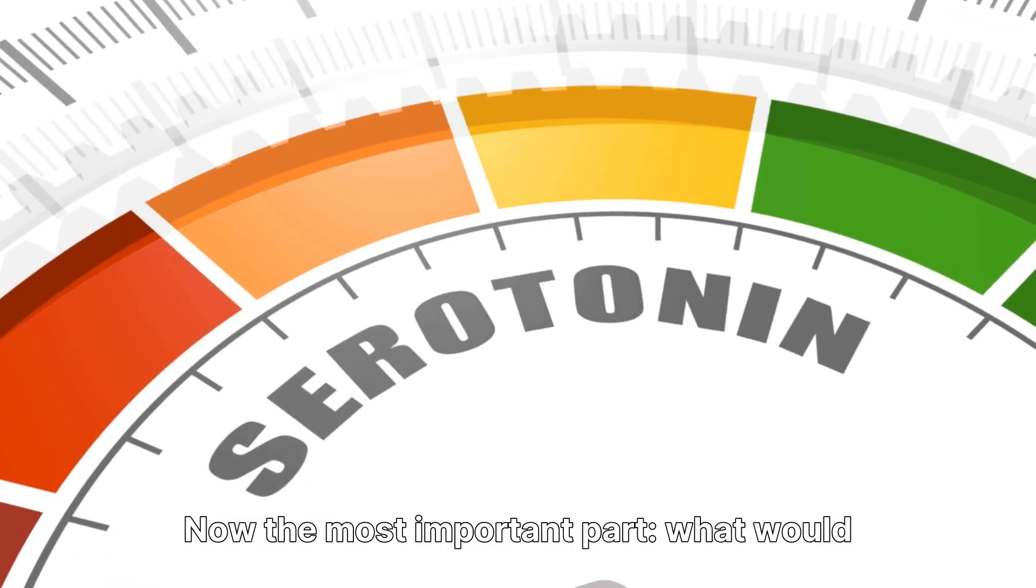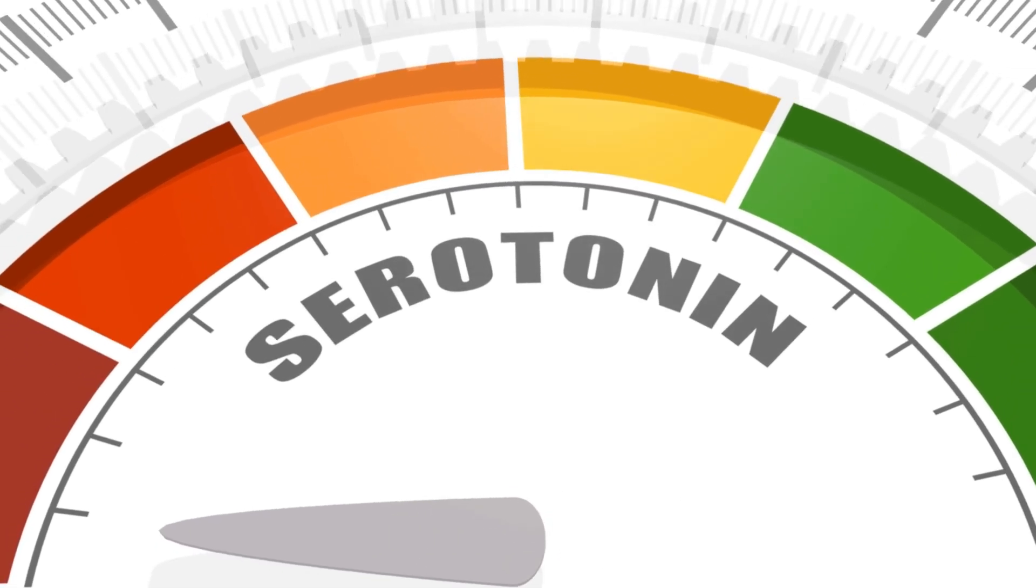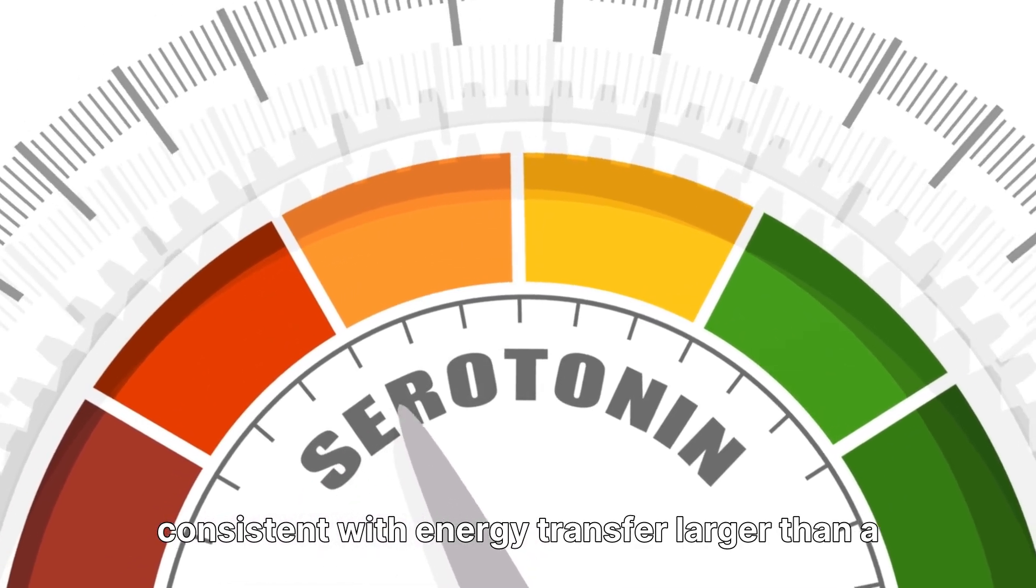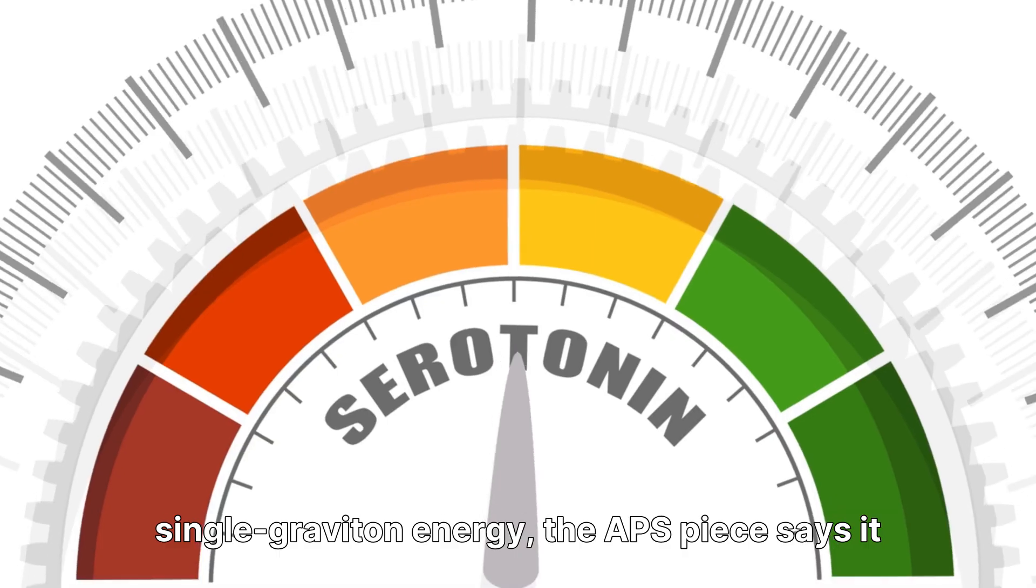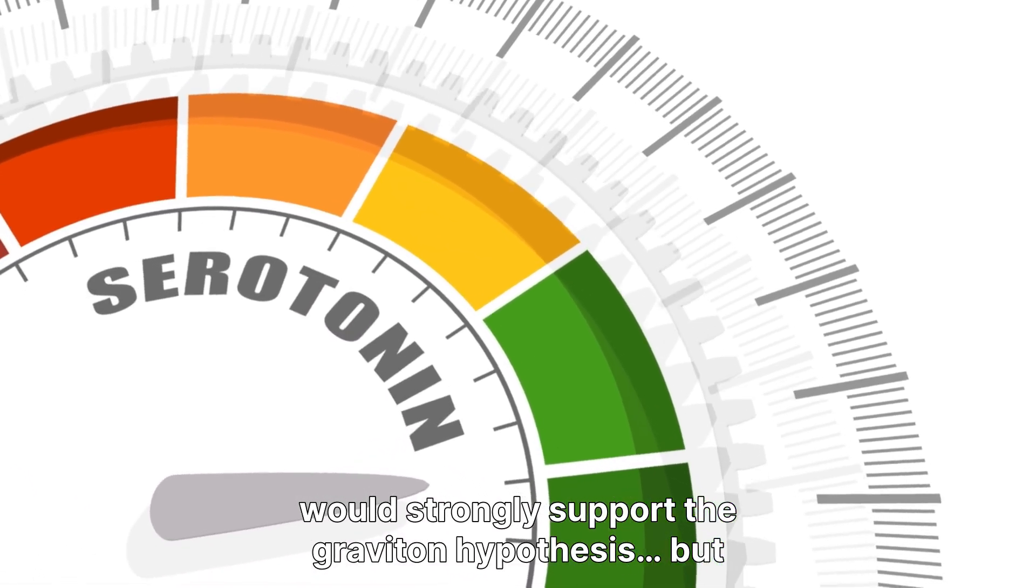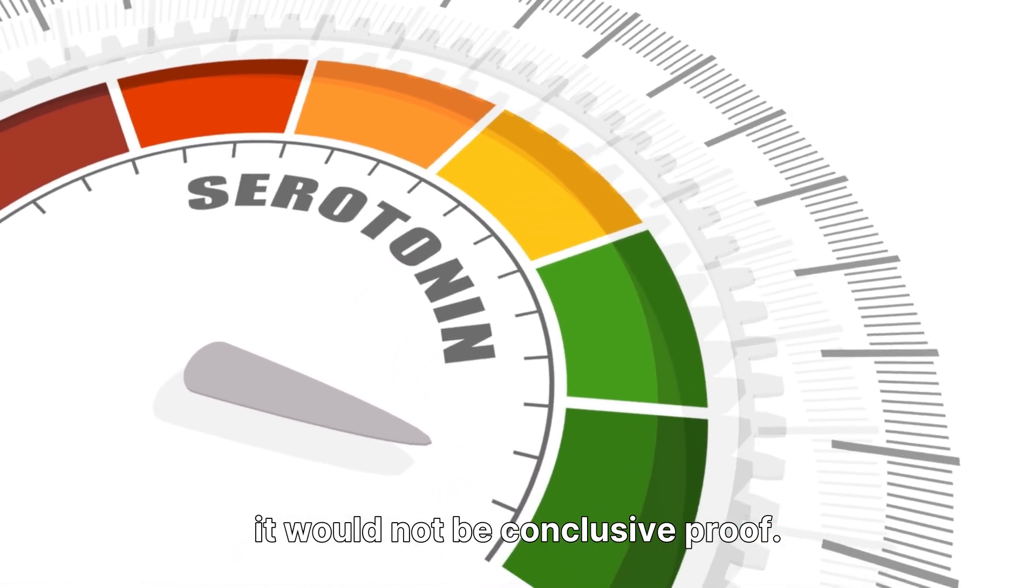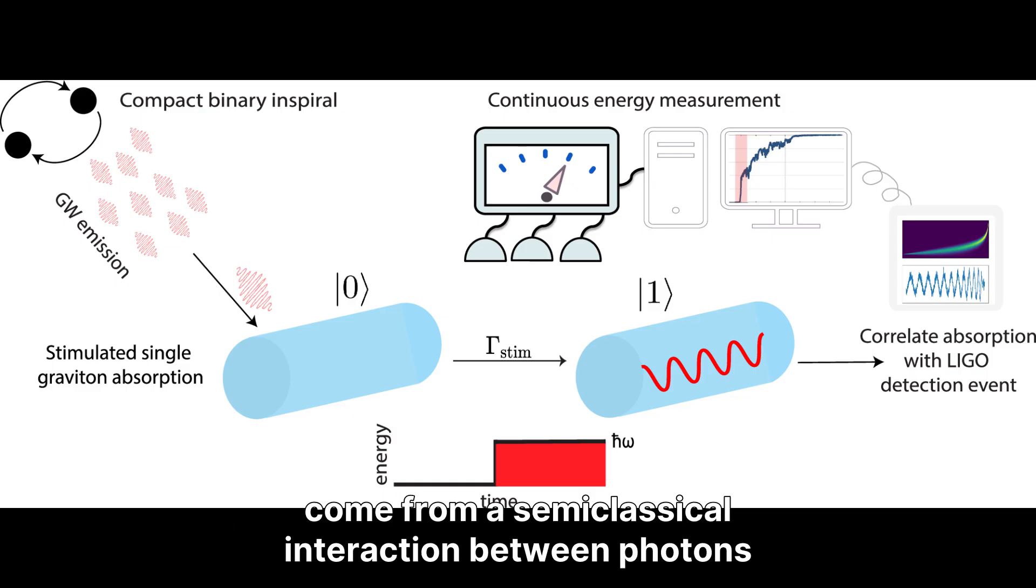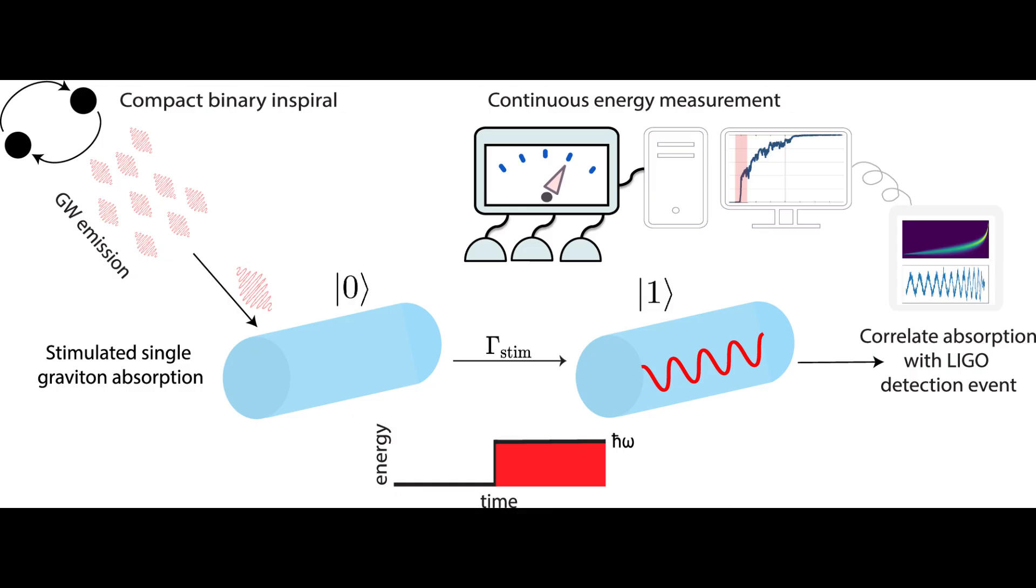Now the most important part, what would this actually prove? Even if you observe a phase difference consistent with energy transfer larger than a single graviton energy, the APS piece says it would strongly support the graviton hypothesis, but it would not be conclusive proof. Because a similar phase shift could also come from a semi-classical interaction between photons and the gravitational wave. So, evidence, not case closed.